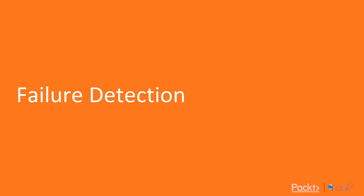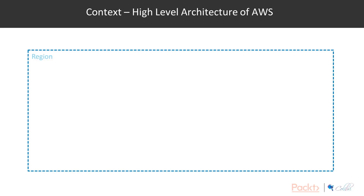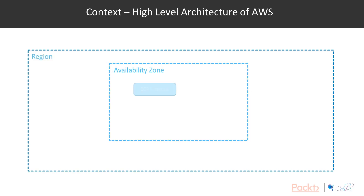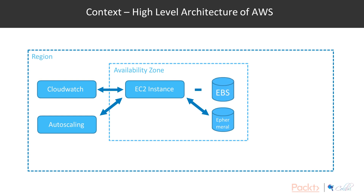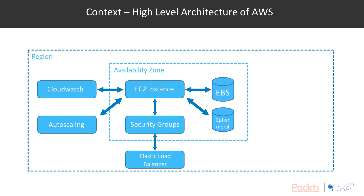Welcome to video 1, Failure Detection. In this video we're going to look at how we can respond automatically to failures in our infrastructure. First let's get an understanding of the context in which we're talking about failures, using a high-level architecture for AWS with EC2 instances as a good example.